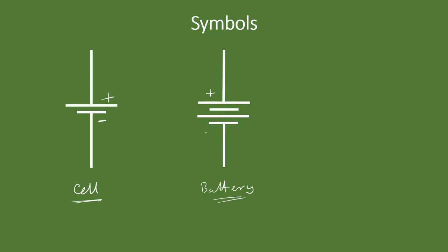In higher studies you may see voltage sources represented differently — this alternative symbol specifically denotes the positive and negative terminals of the source. You already know that cells and batteries are examples of voltage sources. There are other voltage sources as well, like photovoltaic cells and thermocouples.